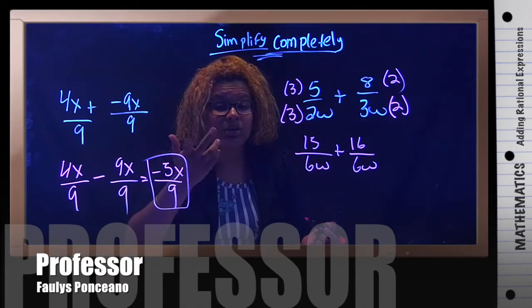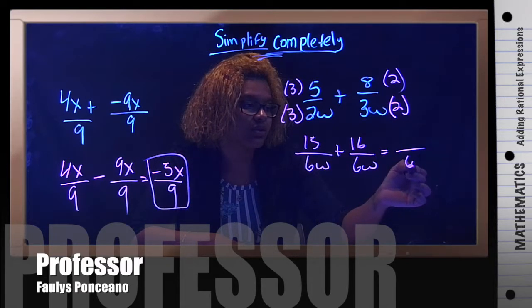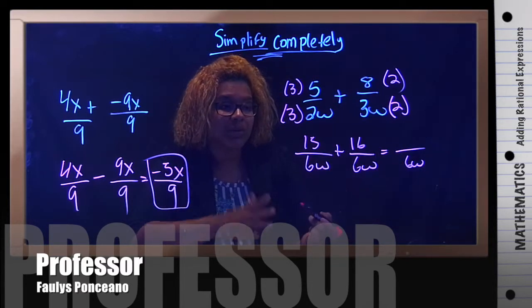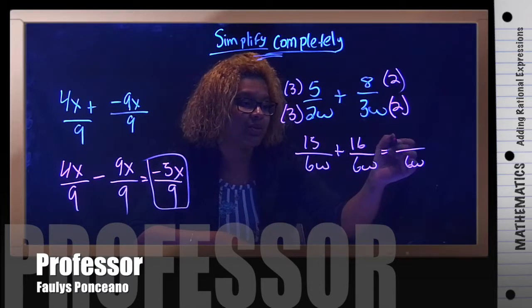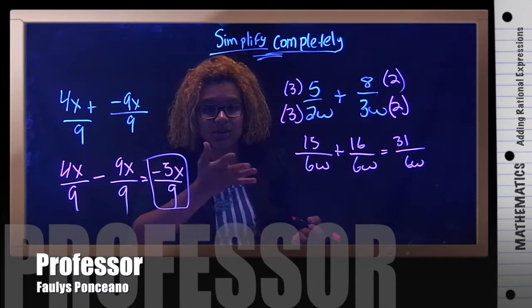Now that the denominators are the same, therefore we can go ahead and add. So I have 6w here. The top, we can simply add them and that gives you 31, 15 plus 16, 31.